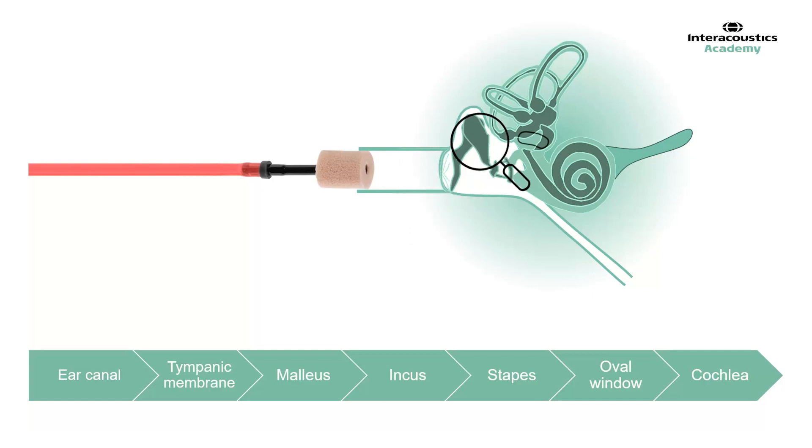Based only on air conduction testing, it is not possible to establish where the source of the hearing loss is. At this point, all that is known is that there is something causing a response to be recordable only when the stimulus is made louder. Identifying what that is requires further testing.